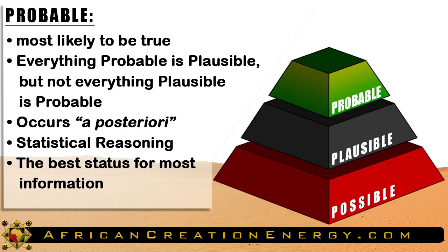The third layer of the pyramid, colored with a green-to-yellow gradient on our way to the truth, represents information, premises, ideas, and concepts that are probable. After collecting evidence and data for your plausible ideas, you will come across information that supports your idea and information that refutes your idea. It is important to note that pseudoscience is the process of collecting only the information that supports your idea and ignoring the information that refutes it. Everything probable must also be plausible, but not everything plausible is also probable.